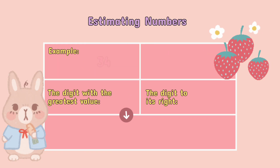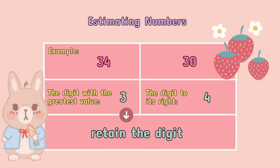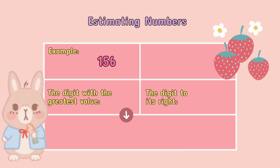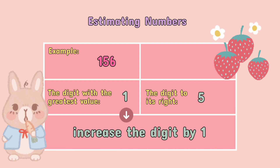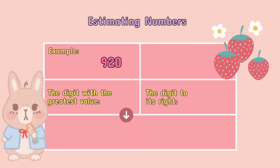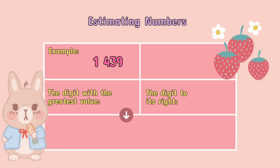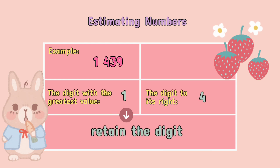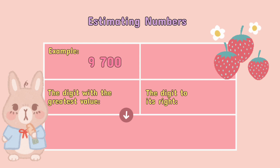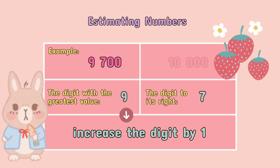Other examples: 34 is 30. 156 is 200. 920 is 900. 1,439 is 1,000.